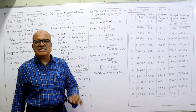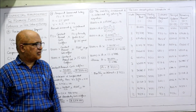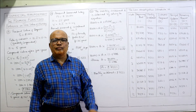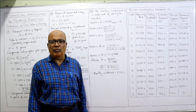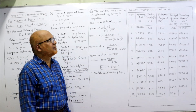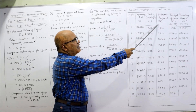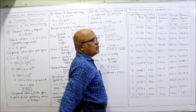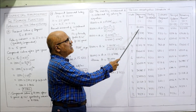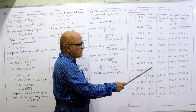Therefore, monthly installment A = 80,000 ÷ 11.0786 = 7,221 rupees. This is the monthly installment payable for 12 months. Now we construct the amortization schedule with columns: month, beginning amount, monthly installment, interest payment, principal payment, and remaining balance.